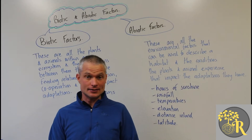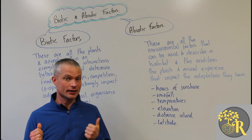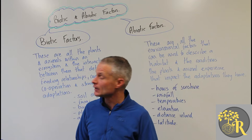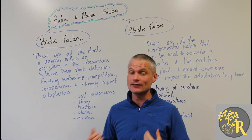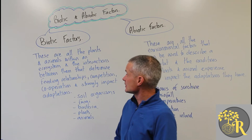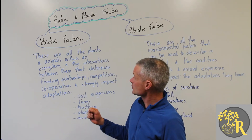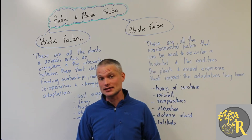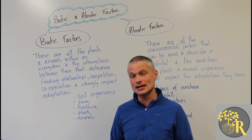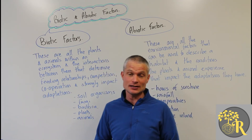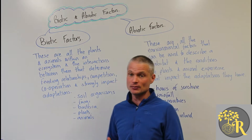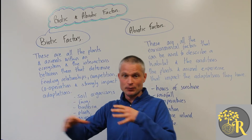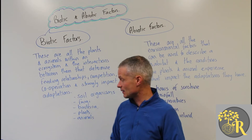When we try to understand an ecosystem, we look at the abiotic and biotic factors as a way of breaking down the complexity. When we look at the biotic factors, we're looking at all the living things in that environment — all the plants and animals within an ecosystem — and the interactions between them, such as feeding relationships, competition, and cooperation, that determine the particular adaptations a species needs to survive within the biological interactions of that environment.